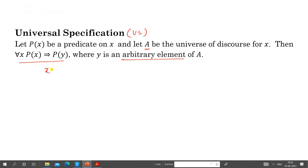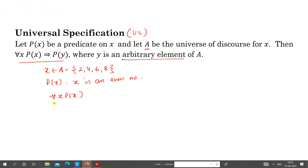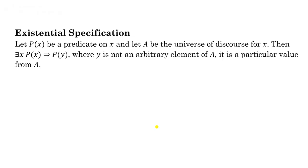For example, let x belong to A = {2, 4, 6, 8} and let P(x) be 'x is an even number.' Then 'for all x, P(x)' means every element of A is an even number, which is true. Whenever it is true, we can write it tautologically implies P(y), where y is an arbitrary element of A.